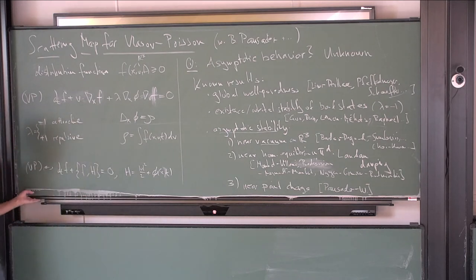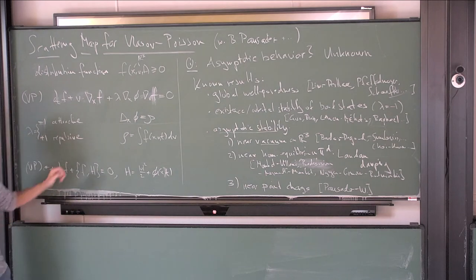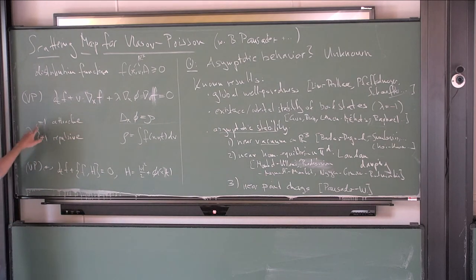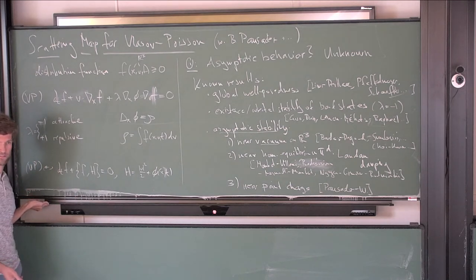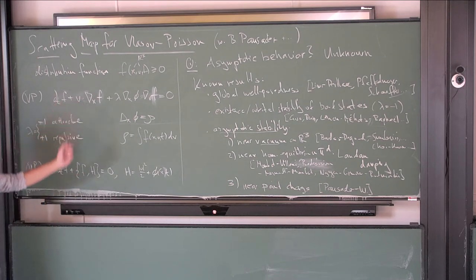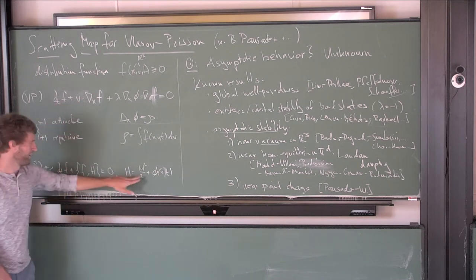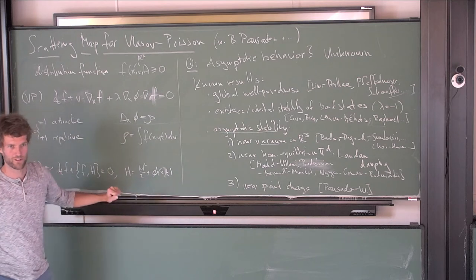In general it's worth distinguishing the sign of this potential — whether it's attractive (minus one) or repulsive. The whole system can also be written in a Hamiltonian perspective: the Hamiltonian is simply a kinetic part plus this potential.